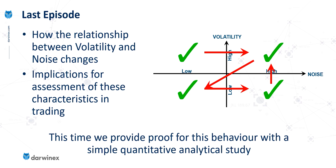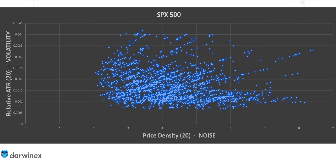I'm going to look at a variety of different assets — a stock index, a currency pair, and also gold. Let's start off with the S&P 500. Along the bottom, on the x-axis, I have a measure of noise, and for this I'm using price density over 20 periods. On the y-axis is a measure of the relative ATR, or average true range, which is a measure of volatility, also using 20 periods. Each point in the scatter chart was sampled once per hour over a period of about three and a half months, giving us a good illustration of how the relationship between noise and volatility changed over that time.